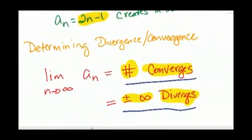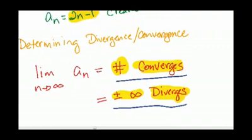And we already went through determining divergence and convergence. You just take the limit. If you get a finite number, it converges, including 0. And if you get infinity or negative infinity, it diverges.